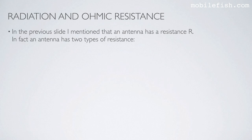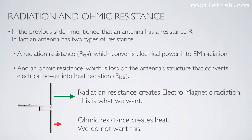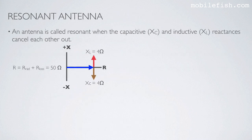An antenna has two types of resistance. A radiation resistance, which converts electrical power into electromagnetic radiation, and an ohmic resistance, which is a loss on the antenna structure that converts electrical power into heat. We want to minimize the ohmic resistance and maximize the radiation resistance. An antenna is called resonant when the capacitive and inductive reactances cancel each other out. The total resistance then consists of radiation resistance plus ohmic resistance — 50 ohms in this example.